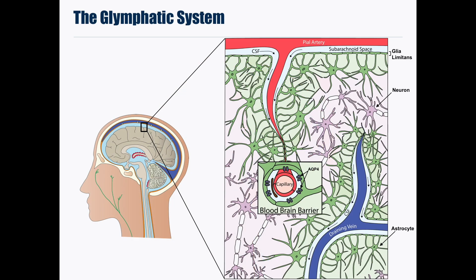The flow of CSF plays an important role in the recently discovered glymphatic system. This system is responsible for clearance of waste and other solutes from brain tissue and is thought to be analogous to the peripheral lymphatic system with the additional involvement of glial cells. The original explanation of the glymphatic system describes how CSF enters the brain via the spaces that surround penetrating arteries, then enters the brain parenchyma where it combines with interstitial fluid and collects waste and other solutes.